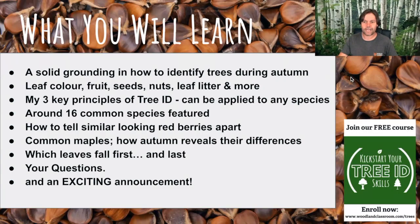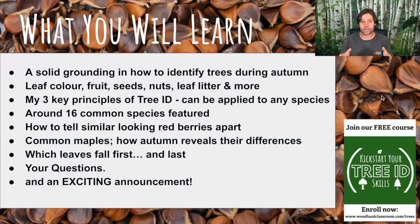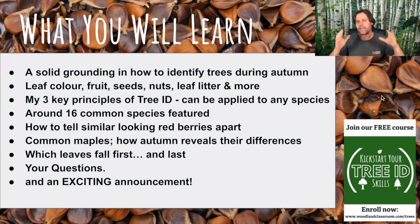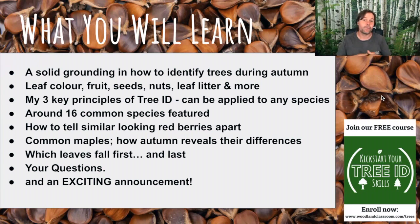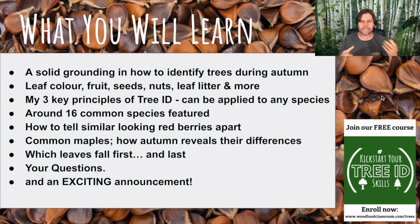What will you learn in this workshop? You're going to get a solid grounding in how to identify trees during autumn. We're going to be looking at leaf color, fruit, seeds, nuts, leaf litter, and other seasonal signs happening out in the countryside right now. You're going to learn my three key principles of tree ID — three hacks which get you going and put you in the right mindset. We're going to cover about 16 common species.